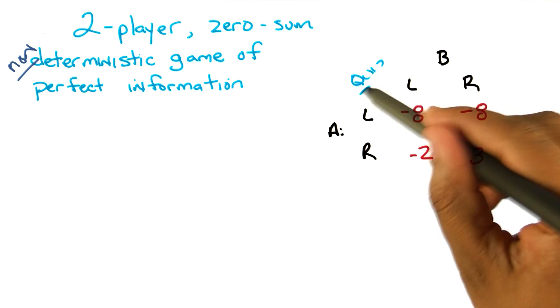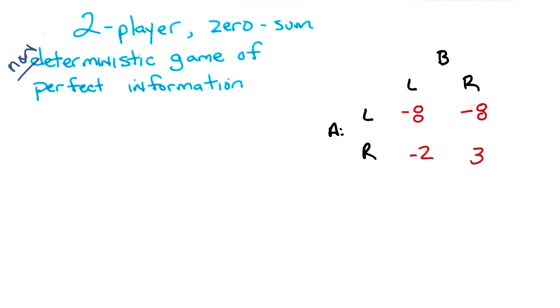We cannot reconstruct that tree from this matrix. Well, actually, we could reconstruct that tree from that matrix. No, we can't. Yeah, of course we could. No, we can't. Yes, we can't because there's an infinite number of trees we could do, and one of them is that one. I see.